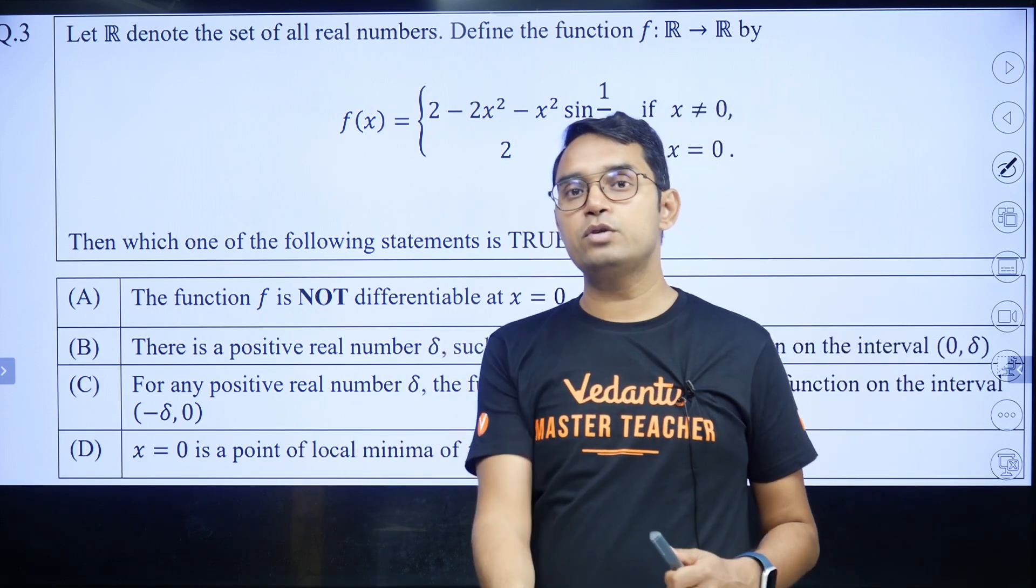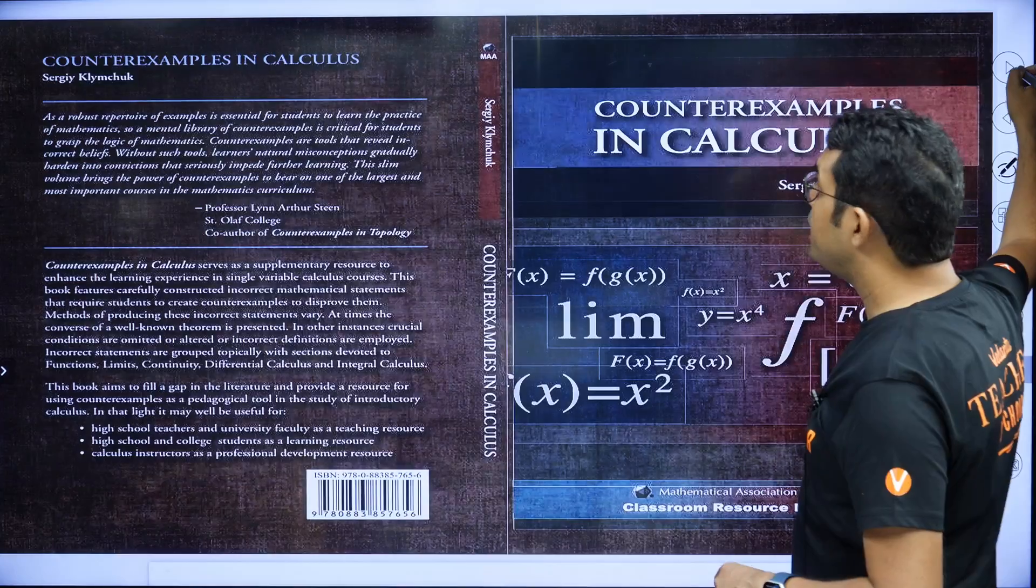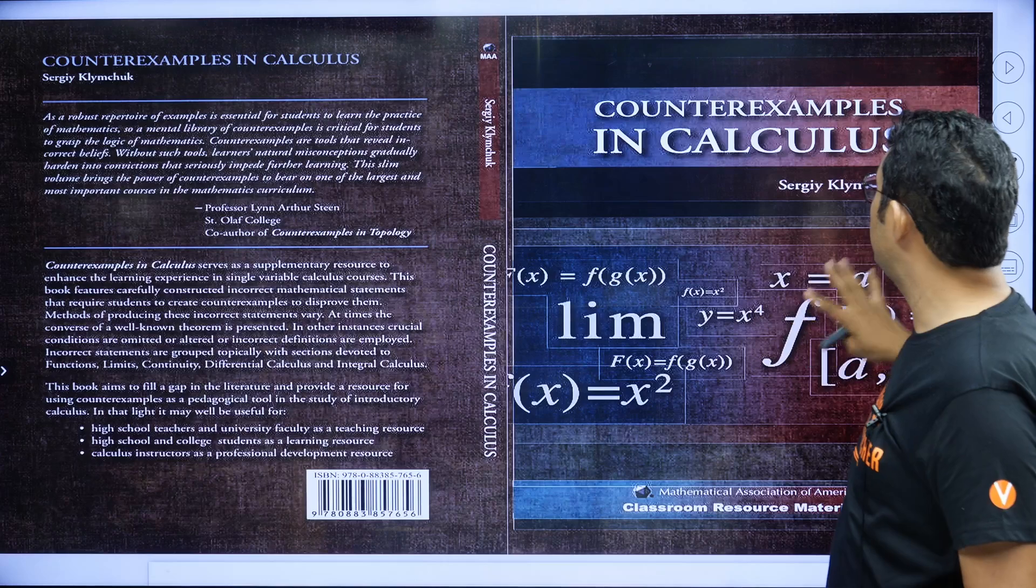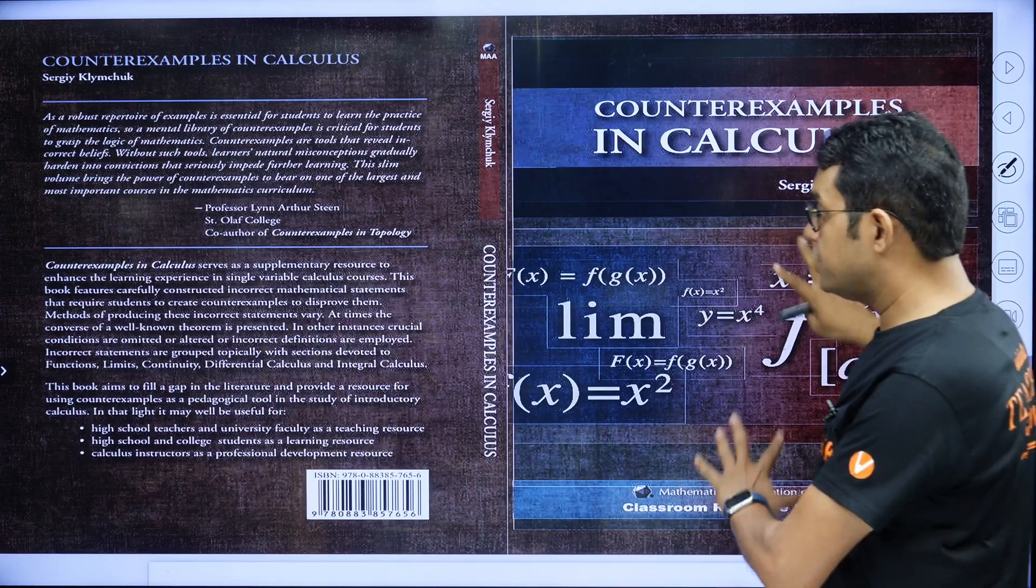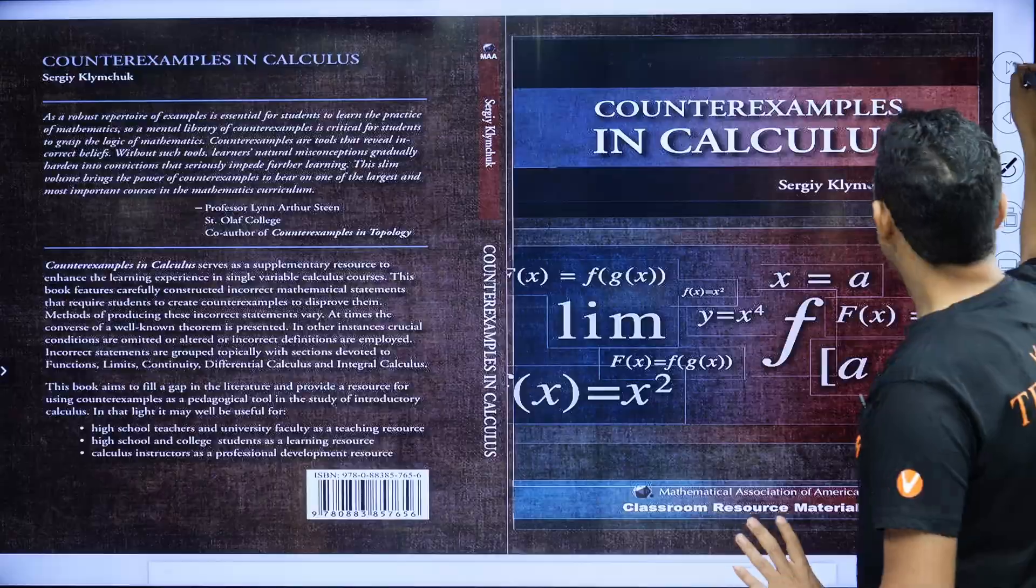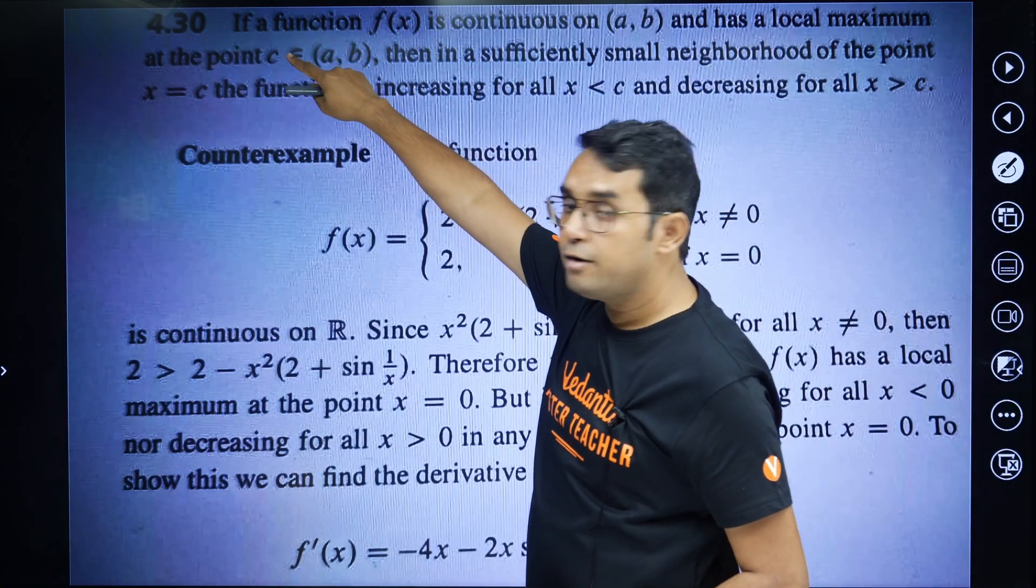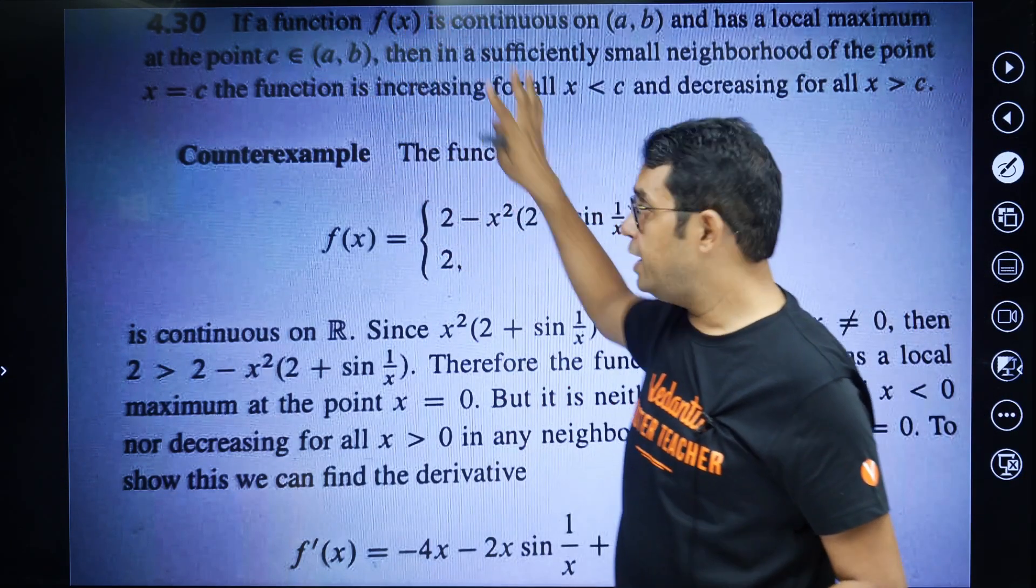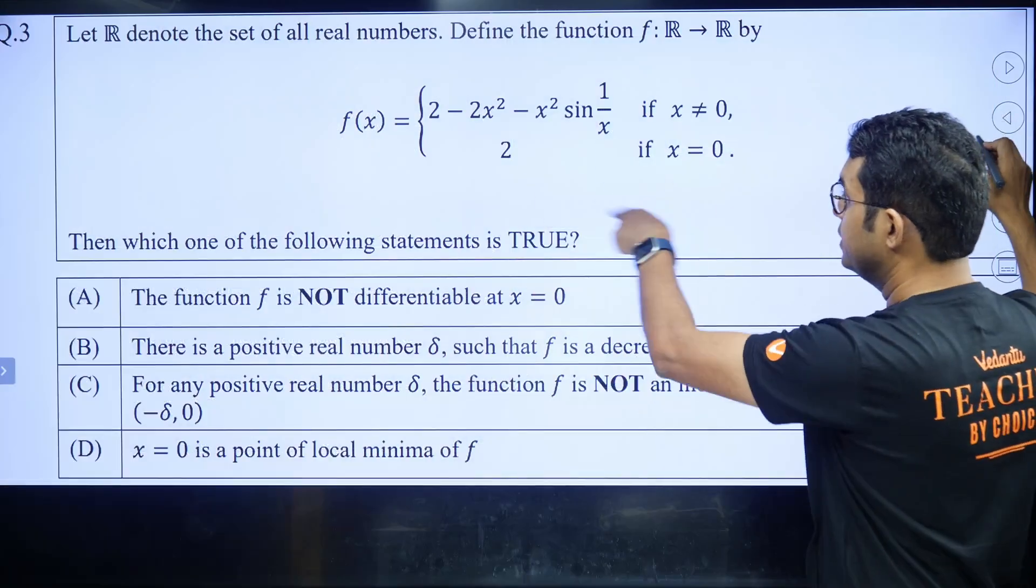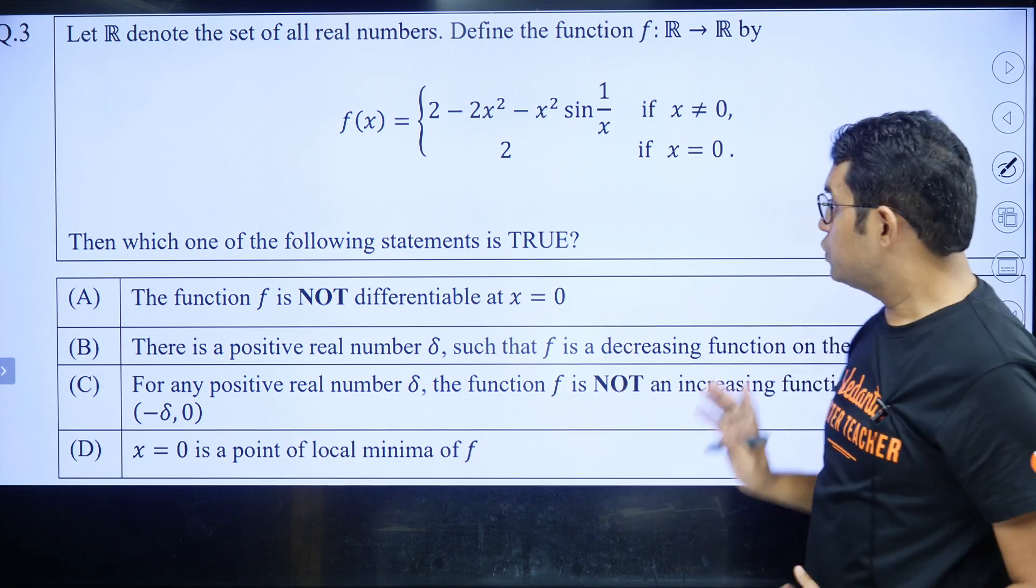I will tell you two things about this question. One is that this question is actually copied from a source called 'Counterexamples in Calculus'. Maybe that was the first source, maybe they copied from somewhere else. But originally, this question is given in article 4.30, where some theory is given and then this example. You can match - it's exactly the same thing. They have only added certain options here.